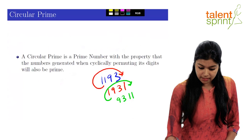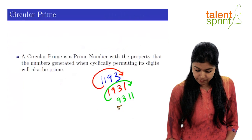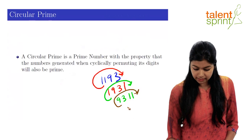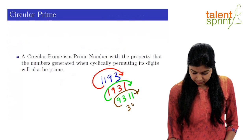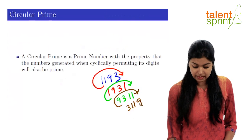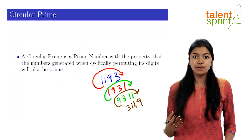In the next iteration, we take the 9 from here, move it to the end again. So our number is 3119, which is again a prime number.